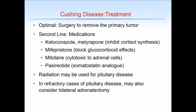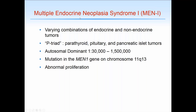I want to mention multiple endocrine neoplasia syndromes, or MEN1. The MEN syndromes are various combinations of endocrine and non-endocrine tumors. MEN1 is classically the so-called P triad — parathyroid, pituitary, and pancreatic islet tumors — due to mutation in the MEN1 gene. While tumors are classically in these three tissues, there's abnormal proliferation throughout the body. There are also MEN2 and likely MEN3 syndromes being identified.